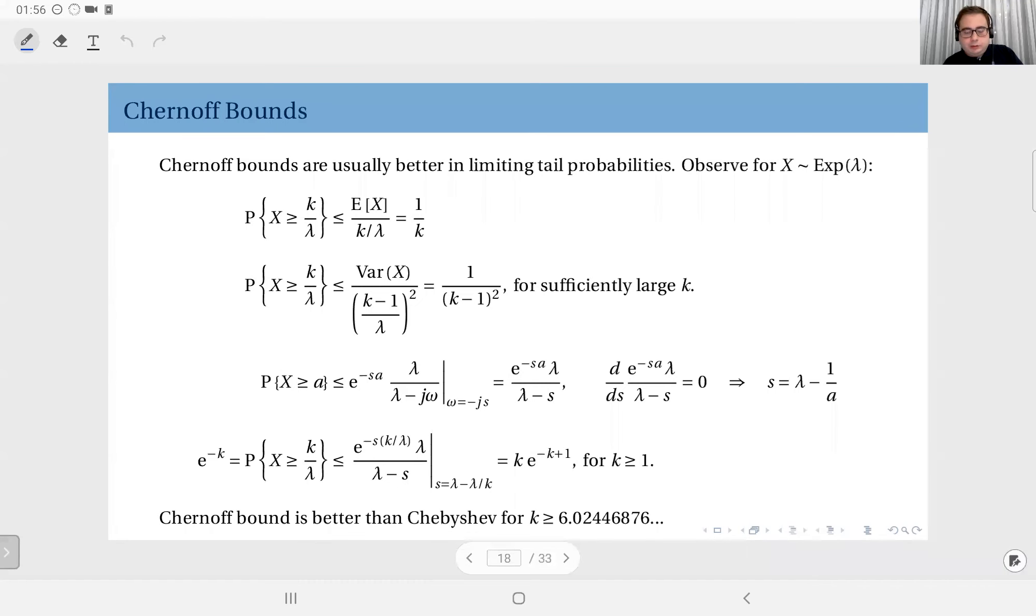As I said, Chernoff bounds are usually better in limiting tail probabilities rather than the probabilities for exceeding a value which is closer to the mean. You would like to use Chernoff bounds for limiting tail probabilities where you're farther away from the mean.